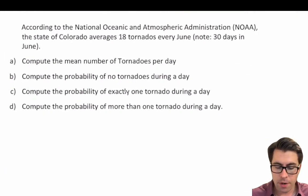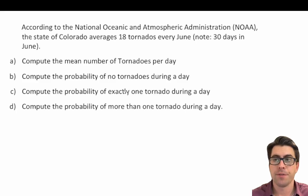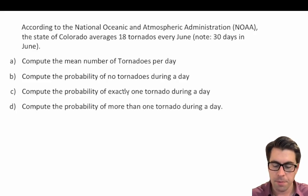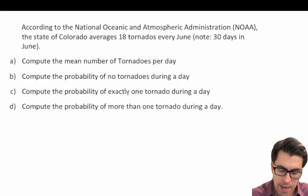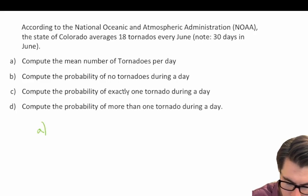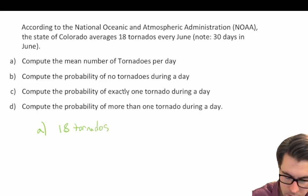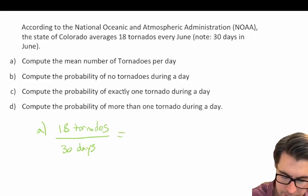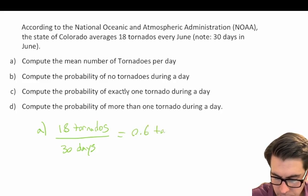Here's our first question. According to the National Oceanic and Atmospheric Administration (NOAA), the state of Colorado averages 18 tornadoes every June, and we're told that there are 30 days in June. The first part of this question says: compute the mean number of tornadoes per day. We know that there are 18 tornadoes over 30 days.